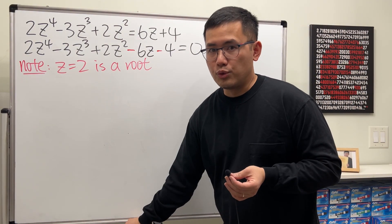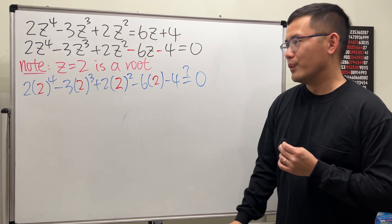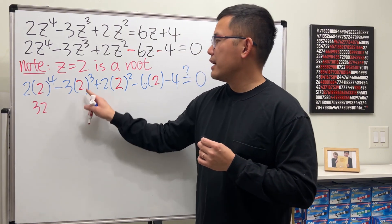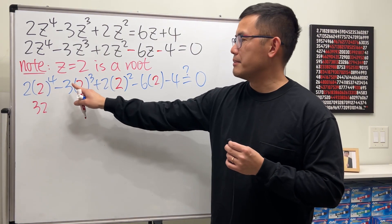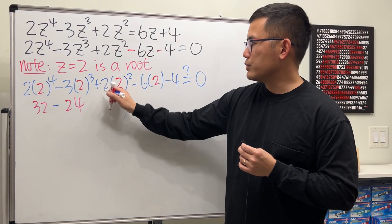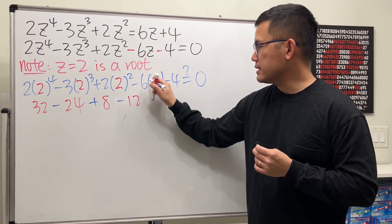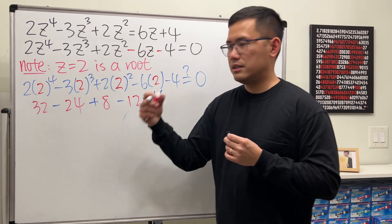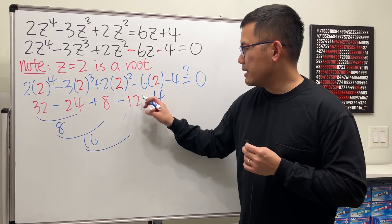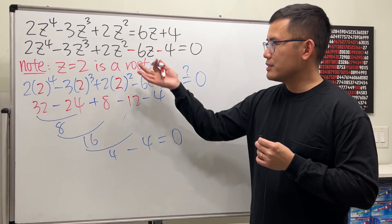Because you told me that z equals 2 is a root, I will just verify this real quick. This means we plug in 2 into all the z's, we should end up with 0. So check this out. 2 to the 4th power is 16, times 2 is 32. 2 to the 3rd power is 8, times 3 is 24. 2 to the 2nd is 4, times 2 is 8. 6 times 2 is 12. And the last thing is minus 4. This and that we get 8, and this and that we get 16. 16 minus 12 is 4, and 4 minus 4, we do end up with 0. So 2 is indeed a root.